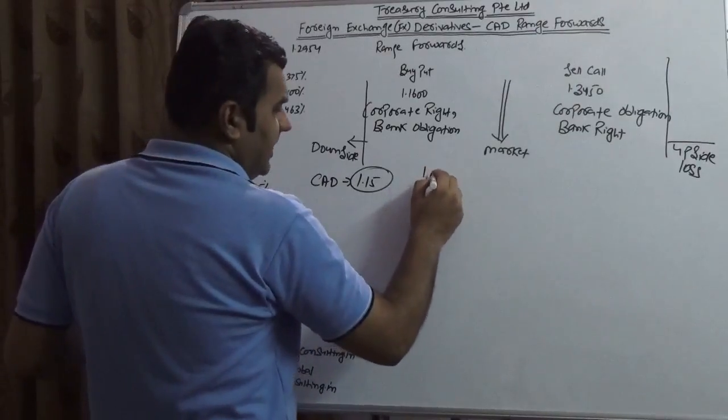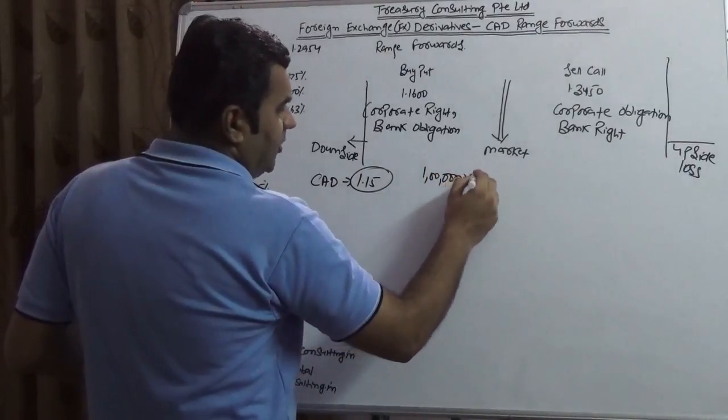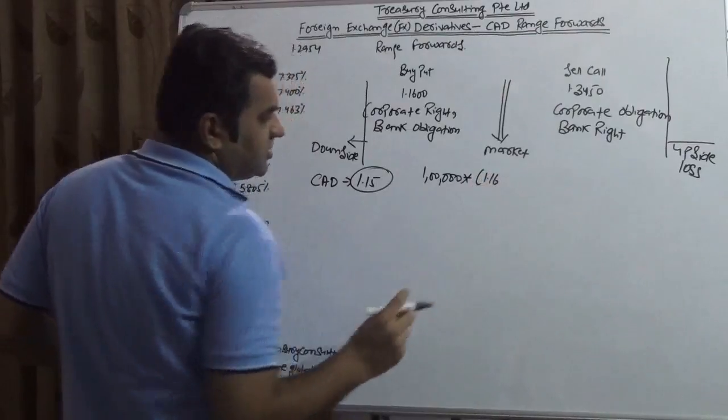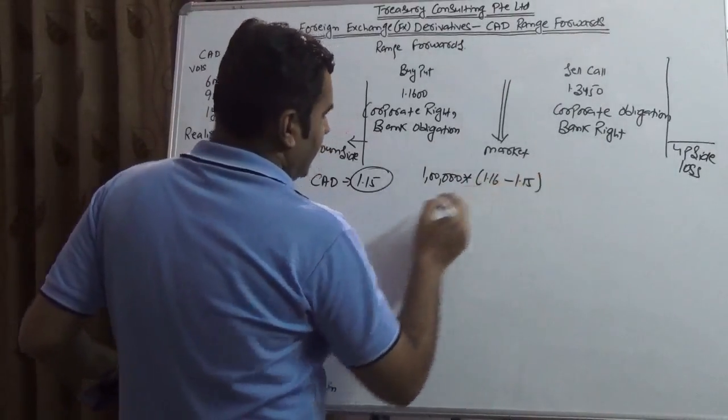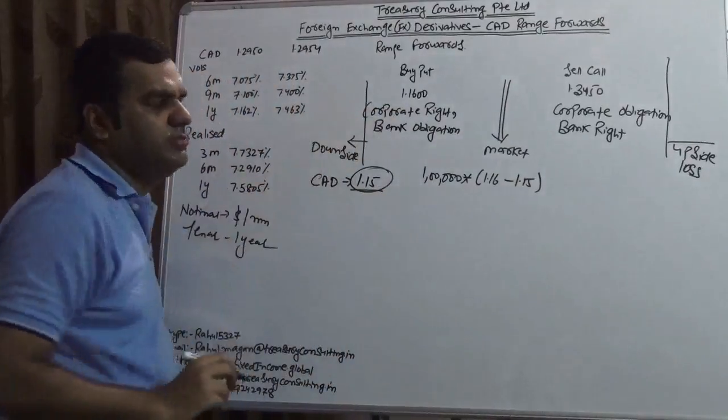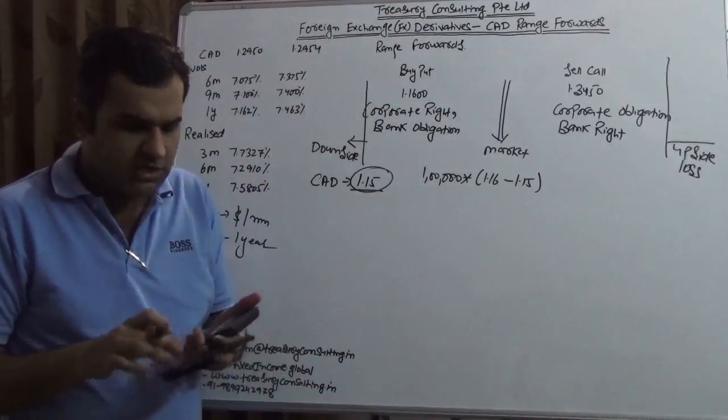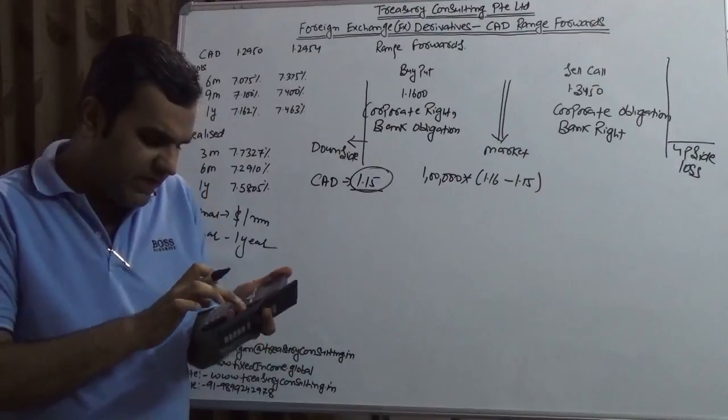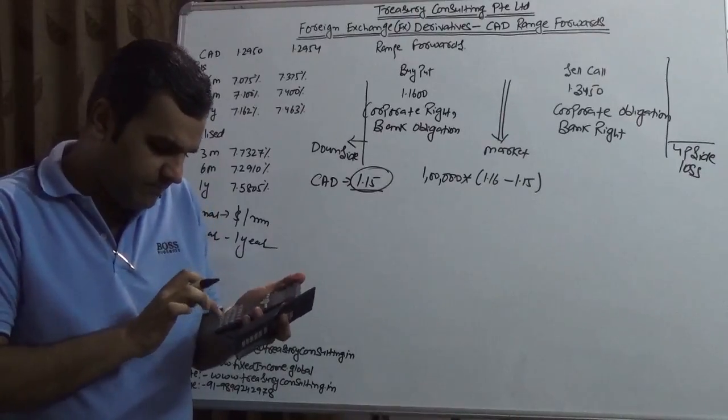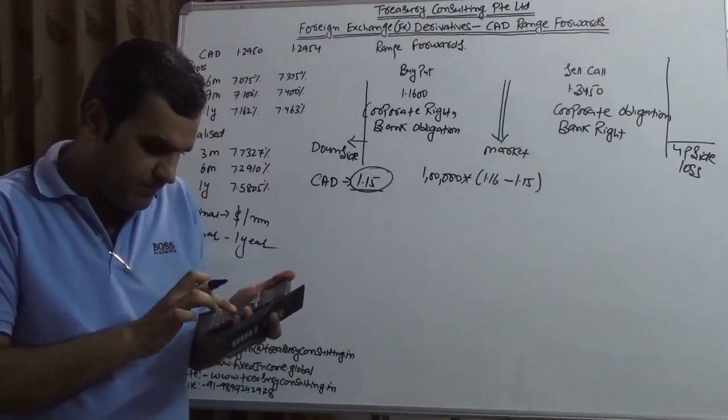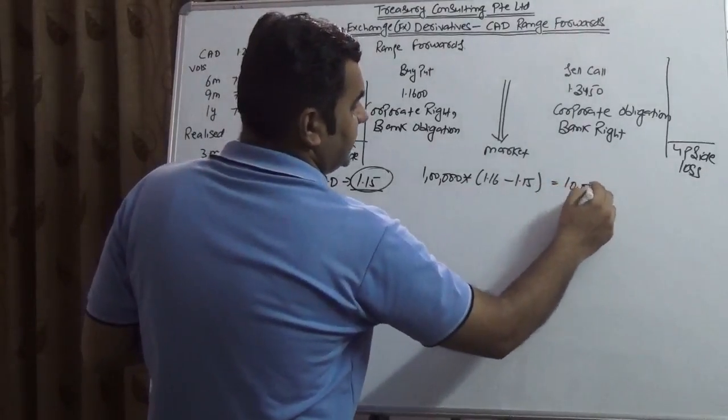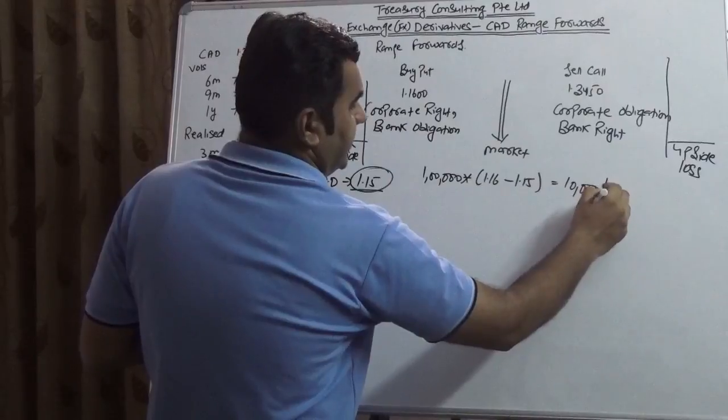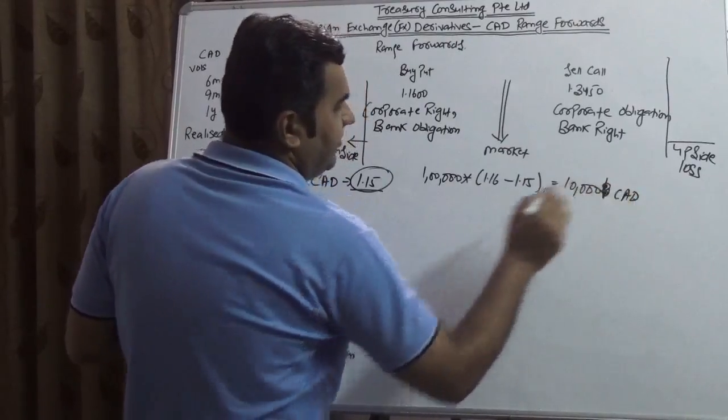So he would be exercising this buy put whereby he would be selling one million notional, which is one million, into 1.16. So the net gain he would be getting minus 1.15, because the market is 1.15 but he would be selling at 1.16. So the net gain he would be getting is 10,000 US dollars, sorry 10,000 CAD, the gain he would be getting, 10,000 CAD.